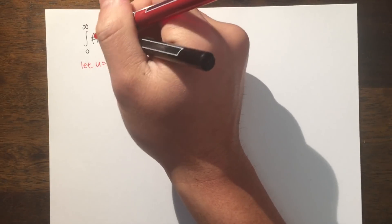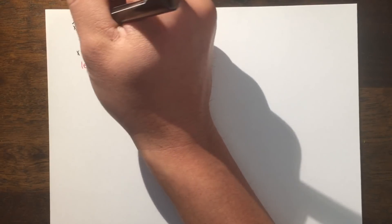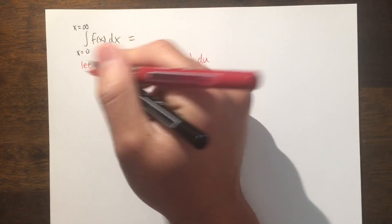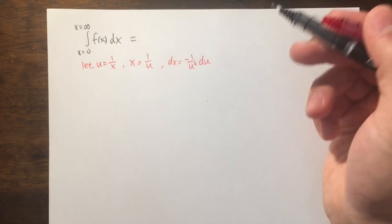Now originally, this integral was in terms of x. So x goes from 0 up to infinity right here. We're assuming this integral is actually good in the sense that it converges and all that stuff.